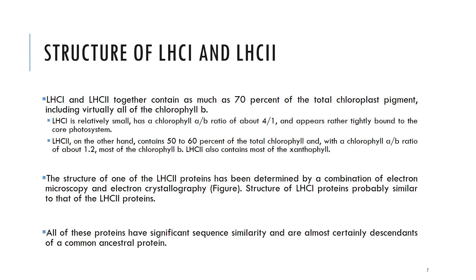Light-harvesting complex 1 and complex 2 together contain as much as 70% of the total chloroplast pigments, including virtually all of the chlorophyll b. Light-harvesting complex 1 is relatively small, has a chlorophyll a to b ratio of about 4:1, and appears rather tightly bound to the core photosystem. Light-harvesting complex 2 contains 50 to 60% of the total chlorophyll with a chlorophyll a to b ratio of about 1.2, meaning most of it is chlorophyll b. LHC2 also contains most of the xanthophylls. The function of both light-harvesting complexes and the core antenna CPs is to absorb light and transfer this energy to the reaction center.